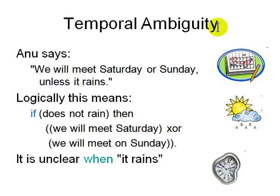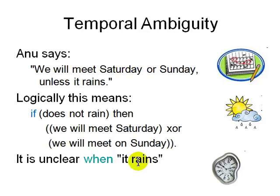Let's start with a simple example of temporal ambiguity. Anu says: 'We'll meet on Saturday or Sunday unless it rains.' How do you break this up logically? It means if it does not rain, then we'll meet on Saturday or Sunday. XOR means she's not going to meet on both Saturday and Sunday — only one of the days. And when does it rain? It's not clear. There's a lot of temporal ambiguity in the English we use, which can lead to problems especially in contracts.